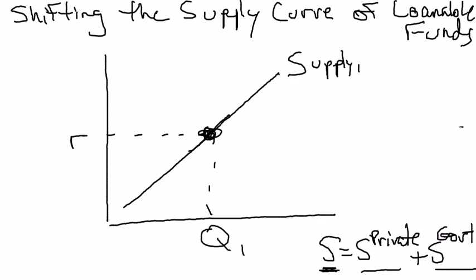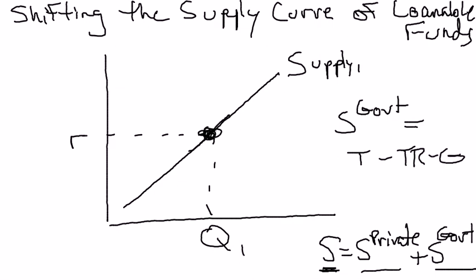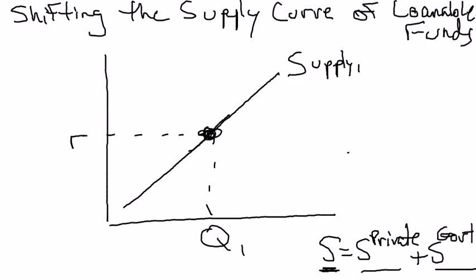Public savings or government savings is a bit simpler. That's equal to all the revenue the government gets in the form of taxes, minus all the transfer payments, minus all the government expenditures on goods and services. Transfer payments are things like welfare, unemployment, and Social Security. G is government expenditures on goods and services — things like roads, bridges, military, and teachers.